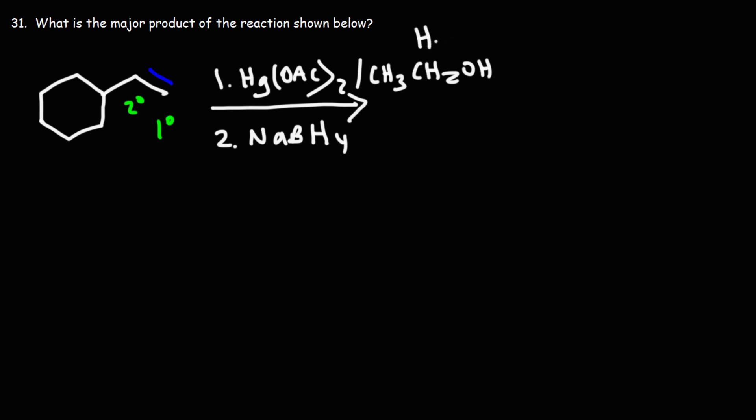Now if this was water instead of ethanol, we would get an OH on the secondary carbon. Instead, we're going to get an ether, OCH2CH3.